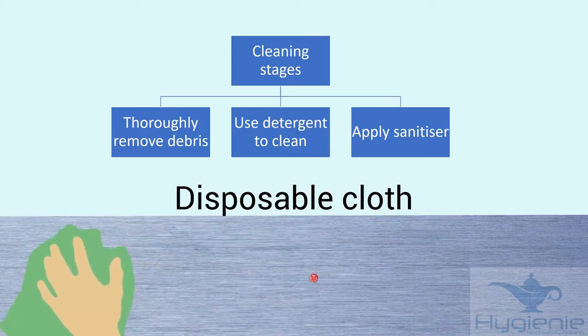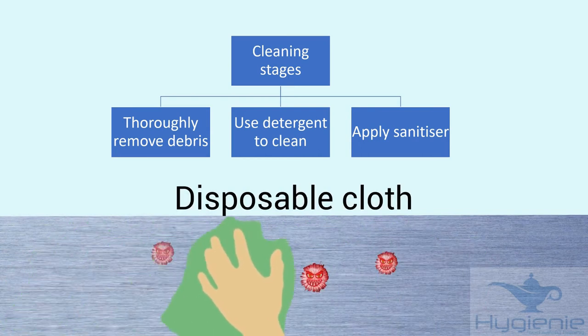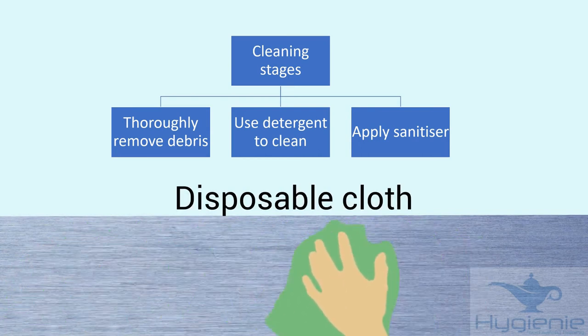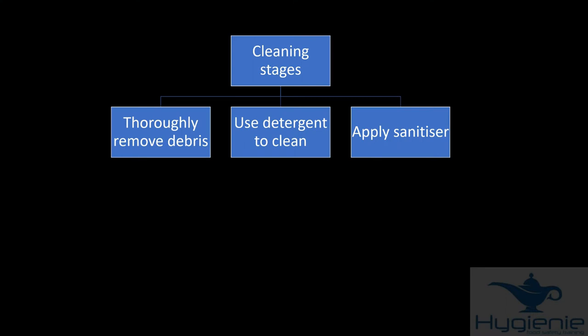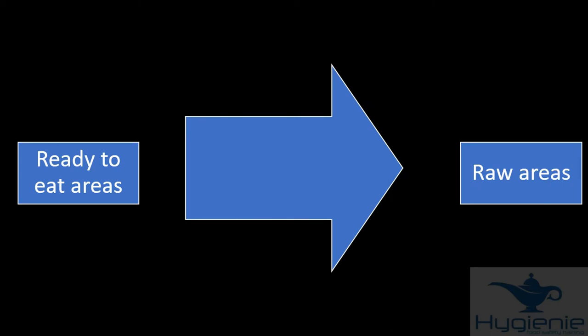Dirty surfaces will require several stages of cleaning. First remove the debris, then use detergent to thoroughly clean down the surface and finally apply a sanitiser or disinfectant using the correct contact time. Try to clean ready to eat areas first before moving to raw areas to avoid cross-contamination.